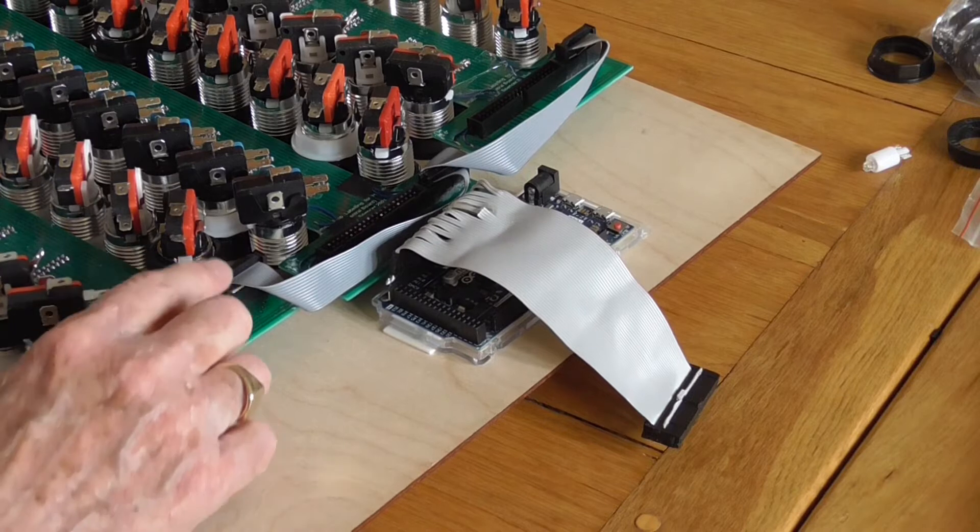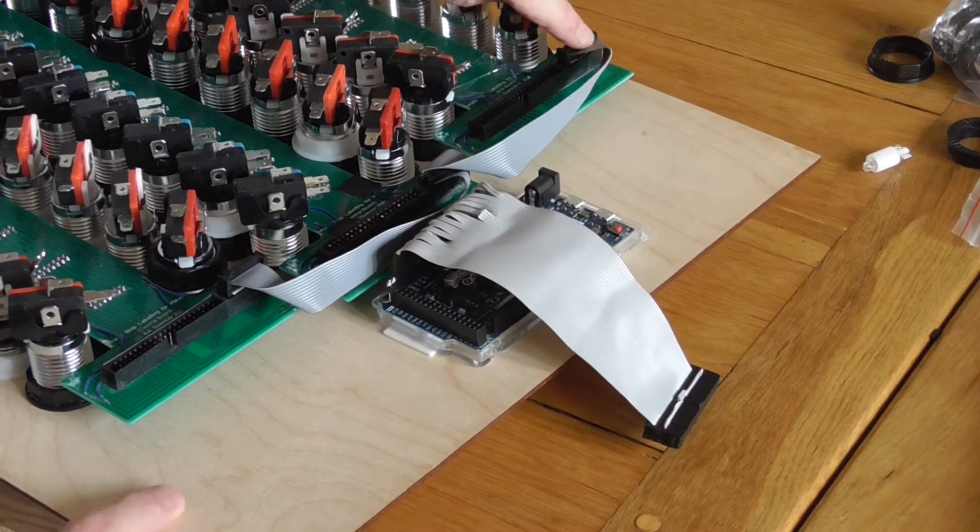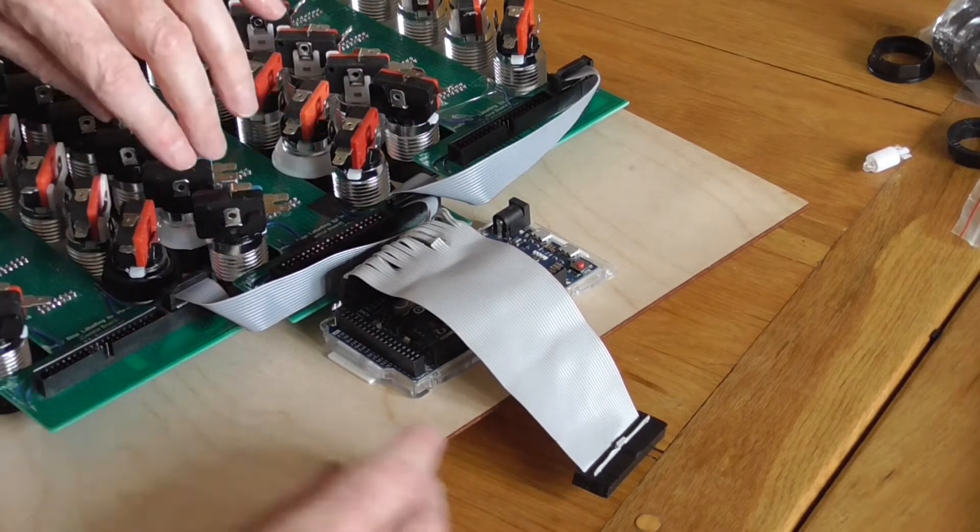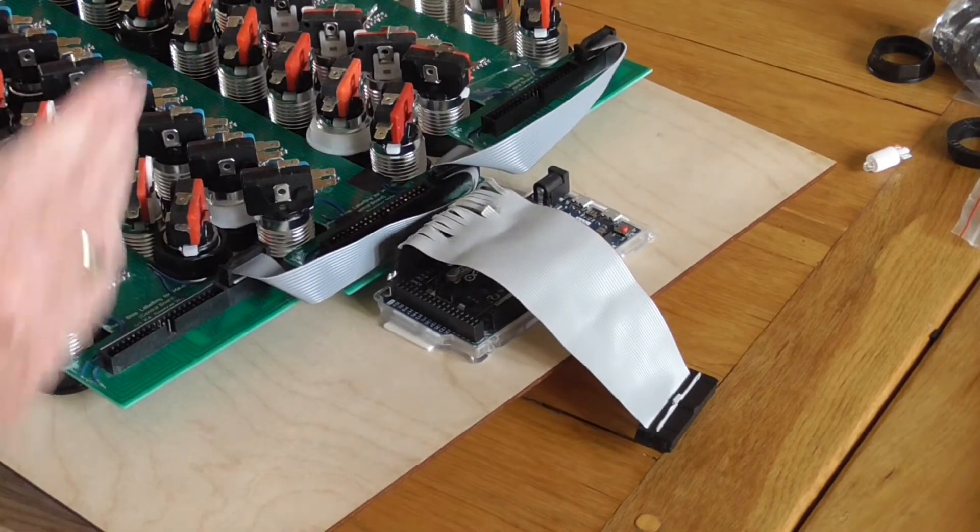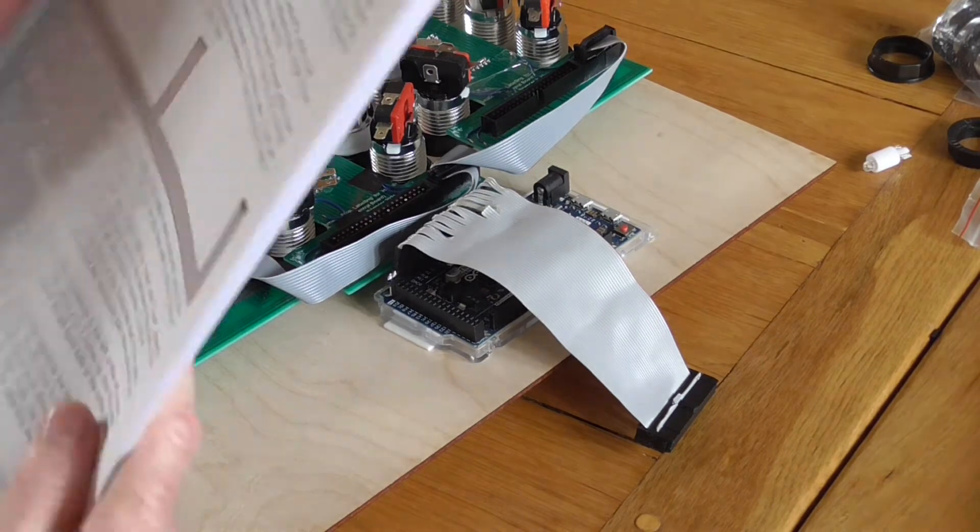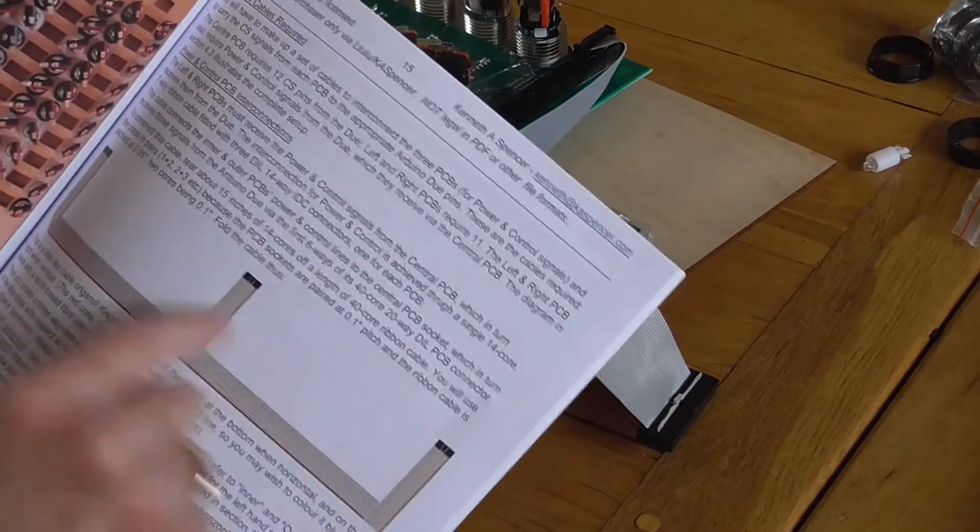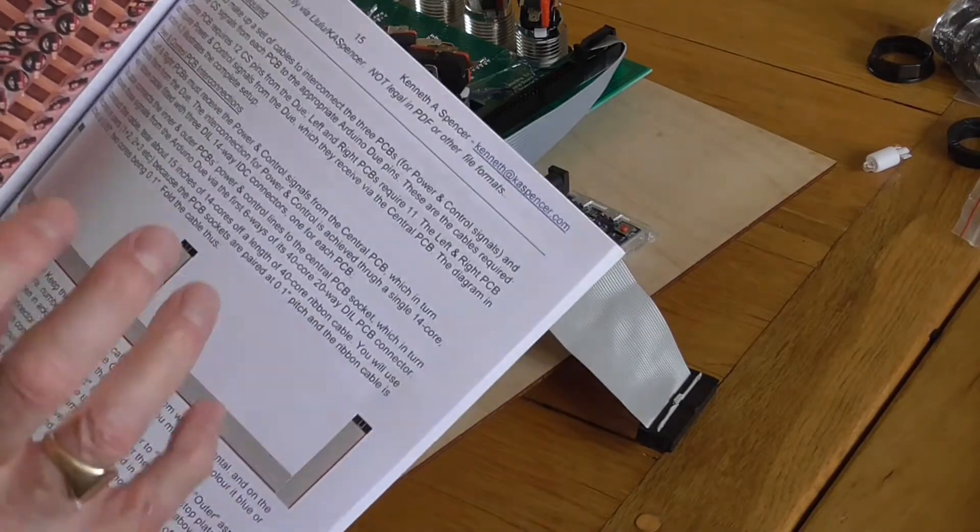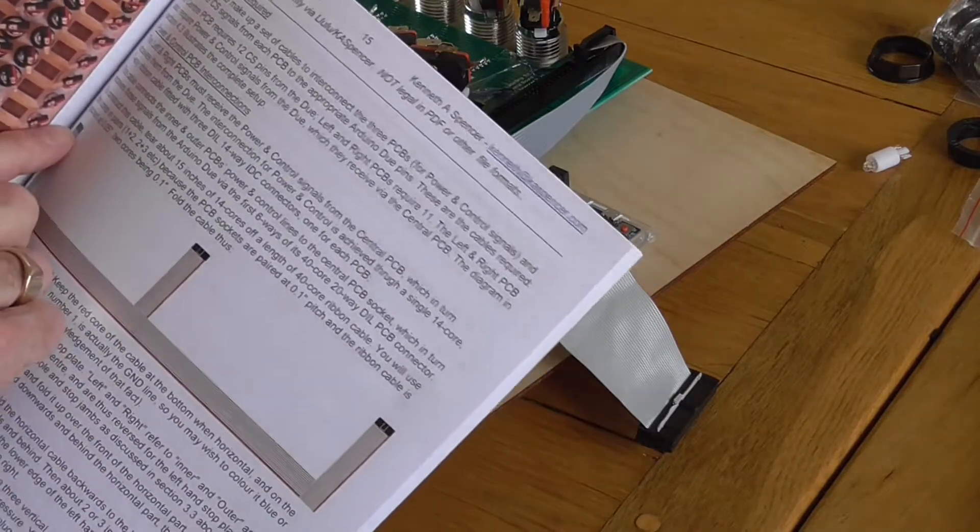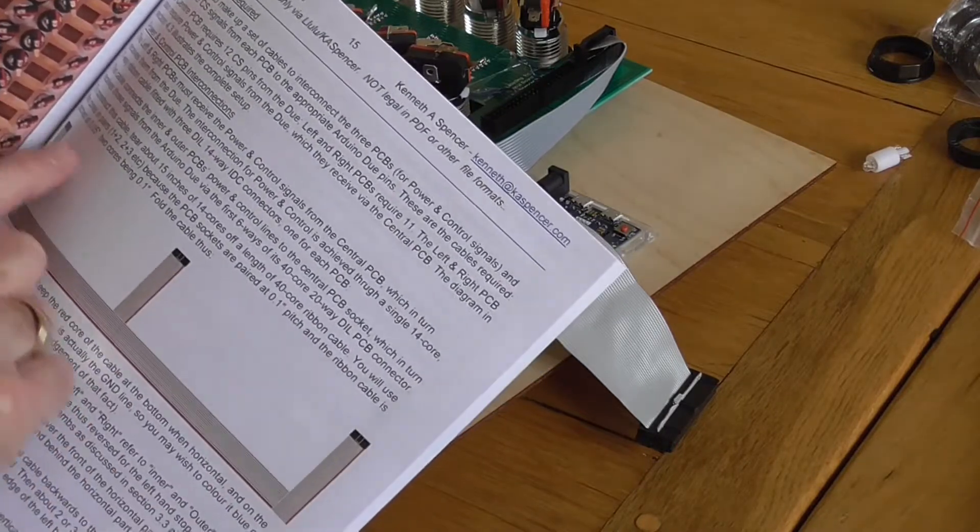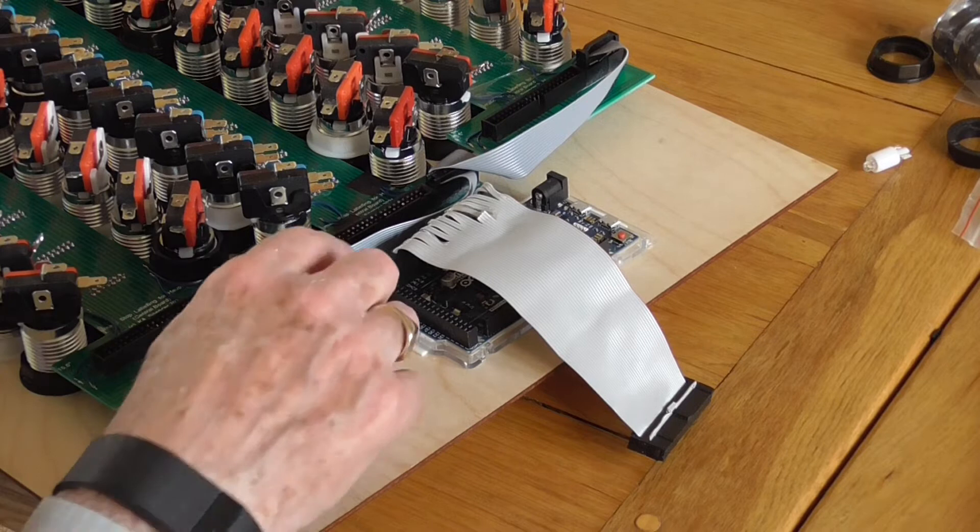So you'll see what I've done: I've connected one, two, three connections, one into each PCB, and we did that by making up the cable that I showed you a moment ago in the manual. You need to take a length of ribbon cable, you need to fold it exactly as described here, and then attach an IDC plug onto the ribbon cable as described and then plug that in as I've just done.